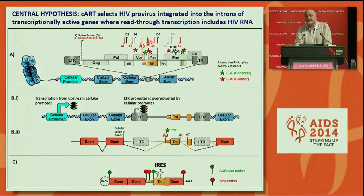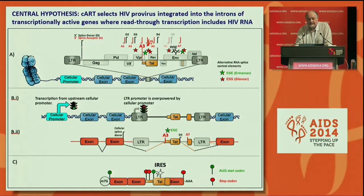The central hypothesis that our lab has been working on is that antiretroviral therapy selects proviruses integrated into the introns of transcriptionally active genes. And in those genes, we can get the read-through transcription that includes HIV RNA. I'll explain why we think this is important.